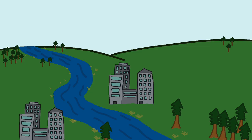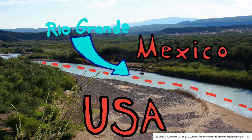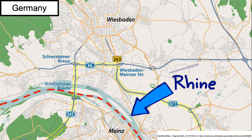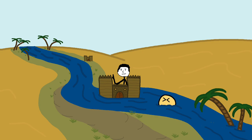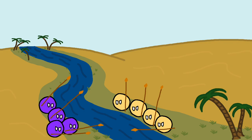Even today rivers are useful as borders. There are hundreds of rivers forming international borders or internal administrative borders for things like cities. But there is one thing that rivers do which borders should not — they eventually change, either naturally or through human intervention, and this can create conflict.